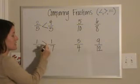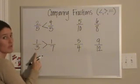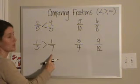So 1 seventh is less than 1 third. So we read this left to right, 1 third is greater than 1 seventh.